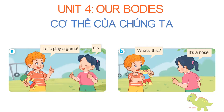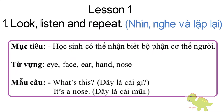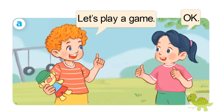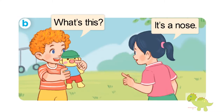Unit 4: Owl Bodies. Page 28, Lesson 1, Activity 1. Look, listen and repeat. A. Let's play a game. OK. B. What's this? It's a nose.